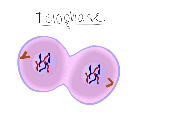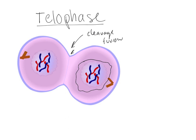Last in mitosis is telophase — telophase meaning the end. At this point, the nucleus is beginning to reform. We have our chromosomes, and a cleavage furrow has formed where the cell membrane is going to reform. You can see a line where the cell membrane is starting to form, and these cells will almost pinch apart from each other. However, the cells do not actually separate in telophase — everything up to the separation happens in mitosis. This goofy-looking cell is still technically one cell because they're not separate yet.